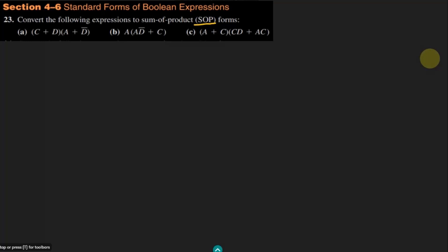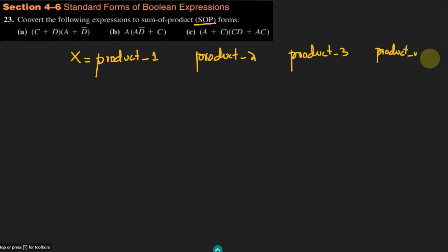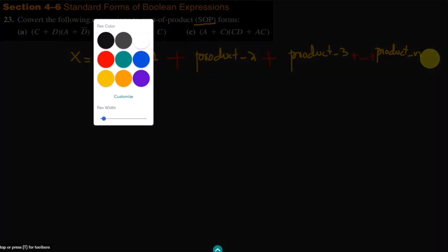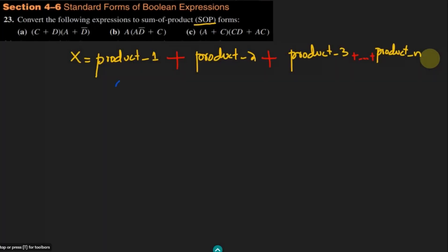If I want to convert any expression to the sum of products, the output form X would contain product 1, product 2, product 3, up to product n. We add them all together, and this is called — written here in blue — the sum of products, or SOP.